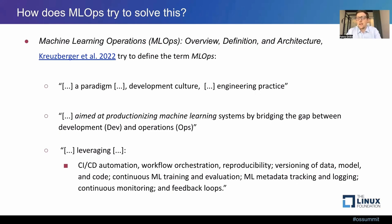They explain that MLOps leverages technologies and methods like CI/CD automation, workflow orchestration, and aims for reproducibility by versioning not only the code but also the data, the configuration of the training code, the resulting model, and the data the model was trained on. MLOps uses continuous training and evaluation to always have an up-to-date model version in production. It uses metadata tracking and logging to record past experiments, and continuous monitoring in production to detect things like model decay. When decay is noticed, a feedback loop retrains and redeploys the model.